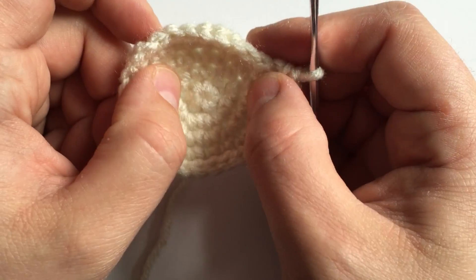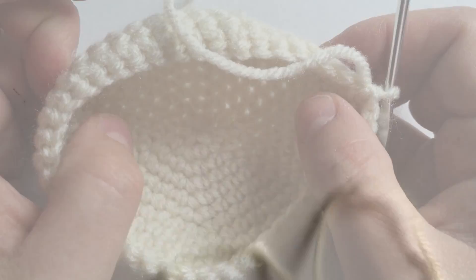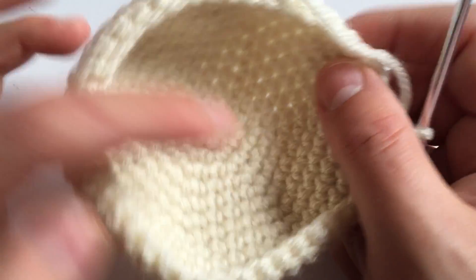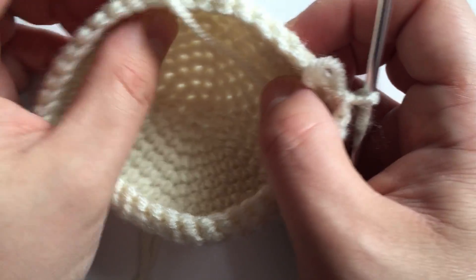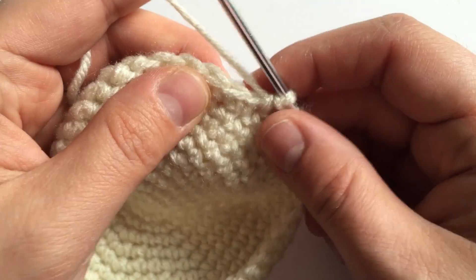After finishing the five rounds of 42, you will start to get something that looks like this. Now we're going to start decreasing to give us a nice shape for her head.